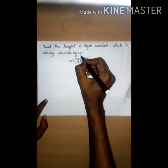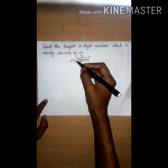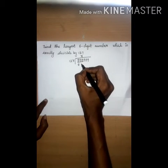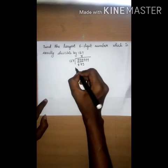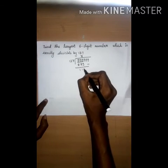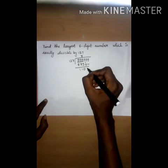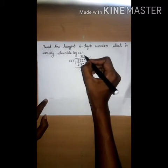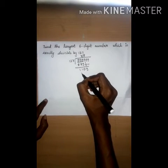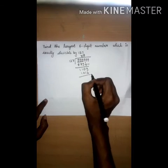So 7 times. 7 times 127 is 889. Now subtract, we will get 110. Now take the 9 down. Now 8 times we can divide. 8 and 1,016. Now again subtract.